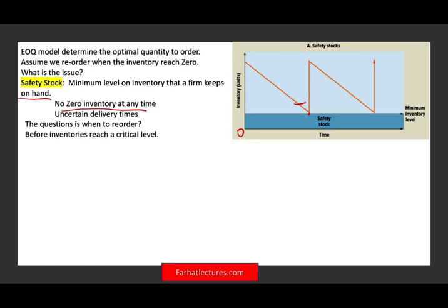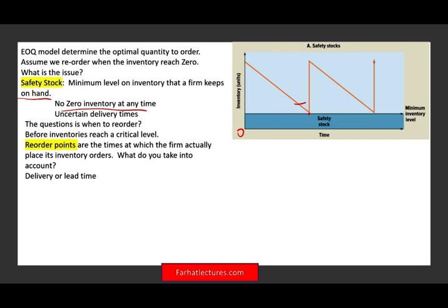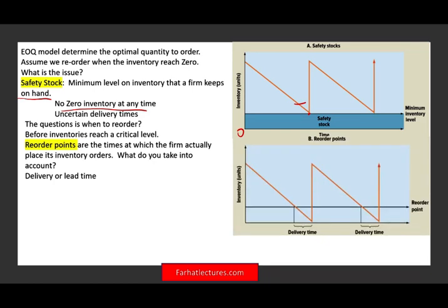So before inventory reach a critical level, and in my opinion, the critical level is the safety stock. You don't want the safety stock. You want the safety stock to be a buffer, a buffer for you. So what do you take into account when you are determining the reorder points? The reorder points is when do you place the order? Say, look, I'm going to go ahead and place the order. So send it to me. Well, you take into account, obviously, the delivery or lead time. How long does it take your supplier to deliver that product to you? So simply put, we have something called the delivery time.